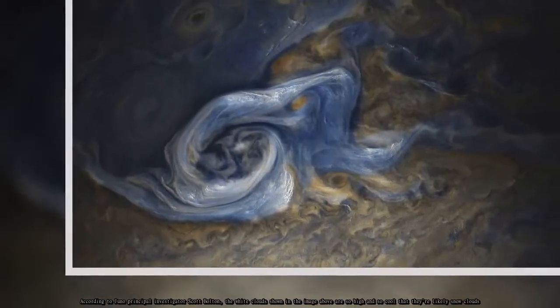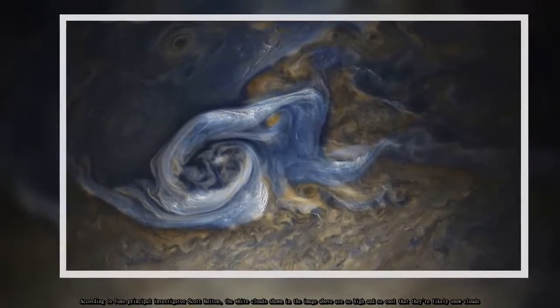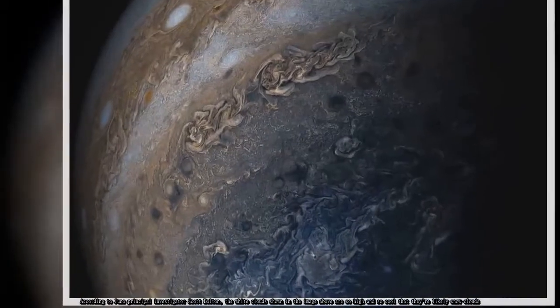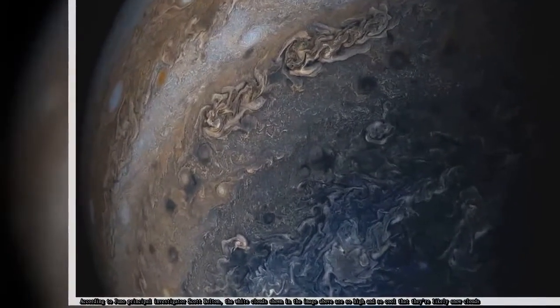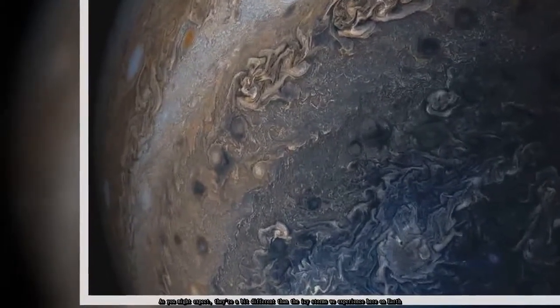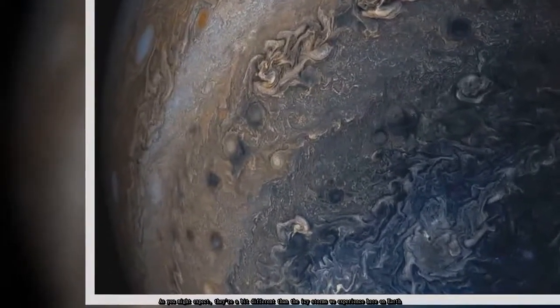According to Juno principal investigator Scott Bolton, the white clouds shown in the image above are so high and so cool that they're likely snow clouds. As you might expect, they're a bit different than the icy storms we experience here on Earth.